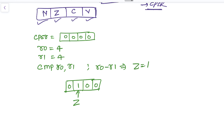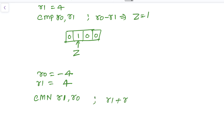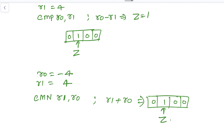Similarly, if R0 equals minus 4 and R1 equals 4, and we apply CMN R1 and R0, the result will be R1 plus R0, which equals zero. In this case the CPSR upper four bits will also be updated to 0 1 0 0, again corresponding to the Zero flag being set.